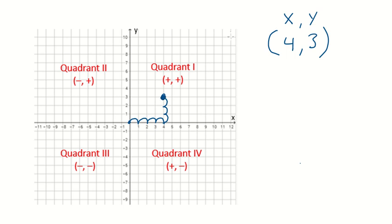And you can see that it's in quadrant 1. Why? Well because the X value and the Y value are both positive. Just kind of like what we can see right there.